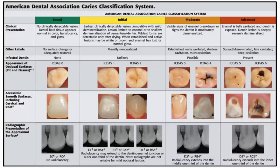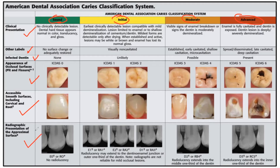Here is the game changer — the main ADA Caries Classification. The four categories are: sound, initial, moderate, and advanced. It is divided into clinical presentation, other labels, infected dentin, appearance of occlusal surfaces, accessible smooth surfaces including cervical and root surfaces, and radiographic representation. You'll notice there are several areas with all these different codes — E1, RA1, and so on — all the way through, even in the radiographic area.